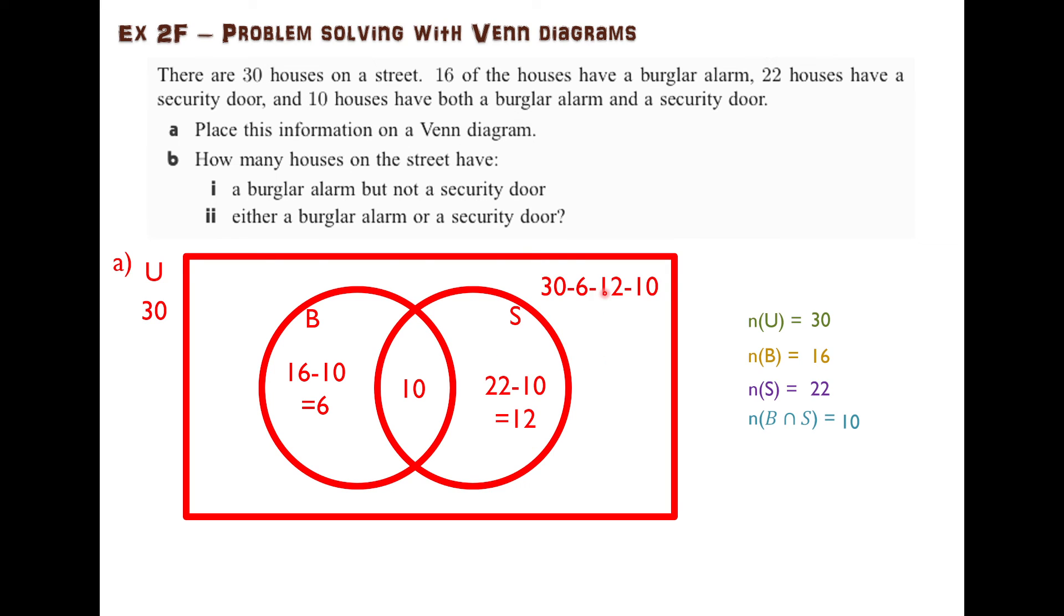Finally, I can figure out how many are on the outside. There are 30 in total minus the 6 here minus the 10 here minus the 12 there. So there are only two that have nothing at all.